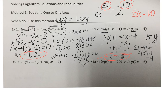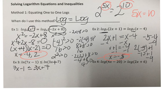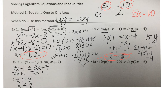Let's look at some inequalities. The domain restriction is really important here because we have to include it as part of our solution. We have natural log of 7x minus 1 is less than or equal to the natural log of 3x plus 7. Natural log and natural log — bases are the same — so I can say 7x minus 1 is less than or equal to 3x plus 7. Subtracting 3x and adding 1, we get 4x is less than or equal to 8, so x is less than or equal to 2.